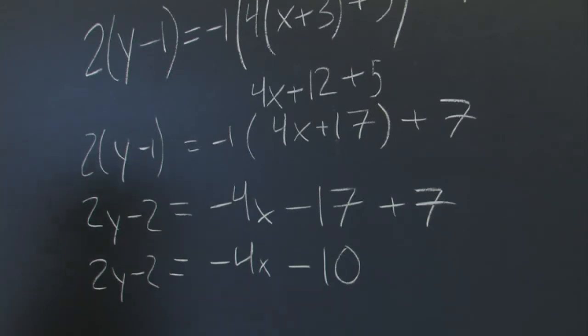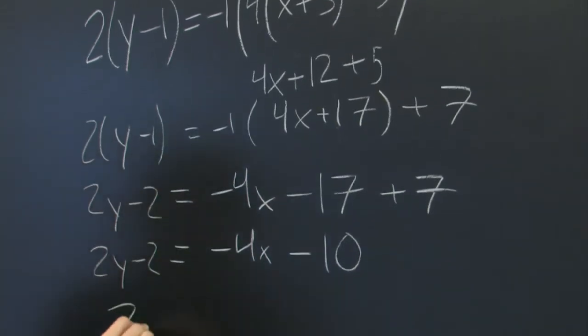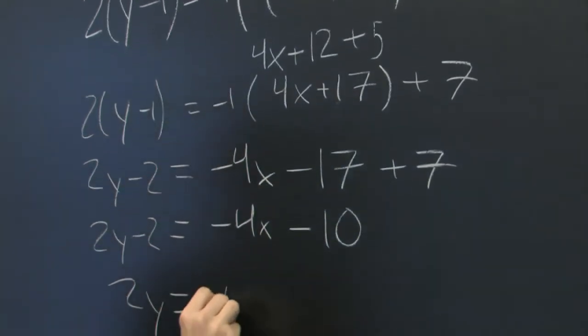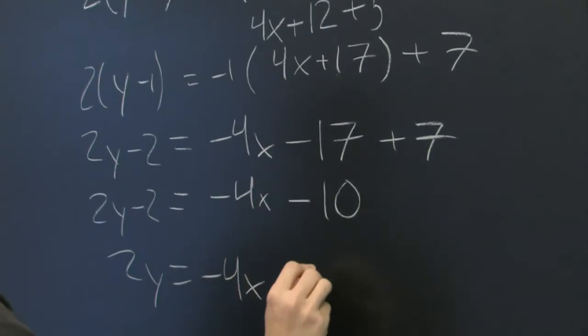Now let's add 2 to both sides. We get 2y equals negative 4x minus 8.